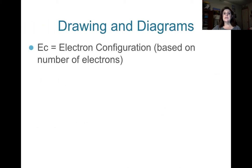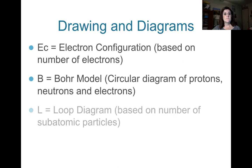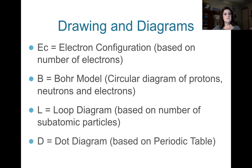So EC stands for the electron configuration. It's based on the number of electrons, and you have a diagram on the back of your periodic table that will help with this. The B stands for the Bohr model, and it's a circular diagram of protons, neutrons, and electrons. And again, you have a sample diagram on the back of your periodic table. Then you have a loop diagram. This is based on the total number of subatomic particles in location. And finally, we have a dot diagram. This is based strictly on the periodic table.